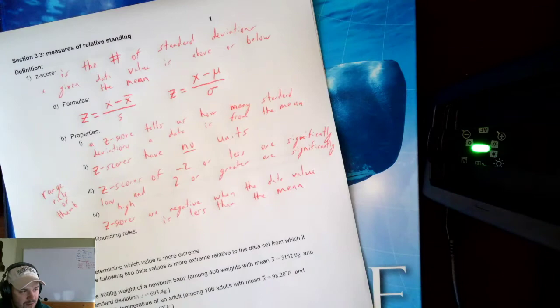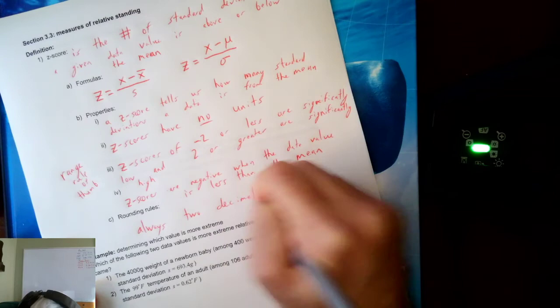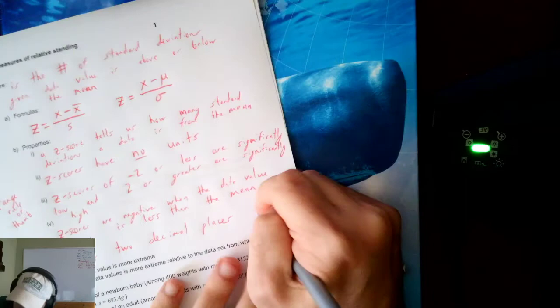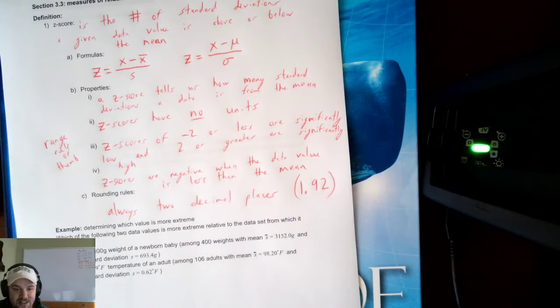Now, rounding rules. Rounding rules for z-scores are actually easy — it's always two decimal places. Always. For example, maybe you get 1.92. Just like money is always two decimal places, z-scores are always two decimal places. Don't forget: the rounding rules are always the same — always two decimal places.